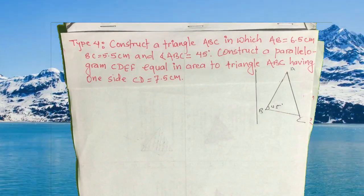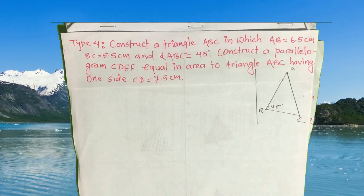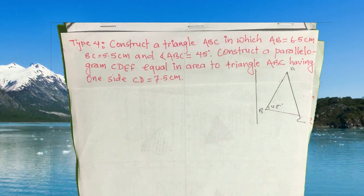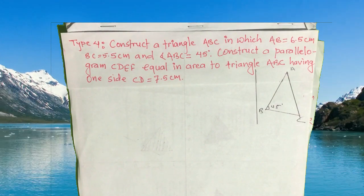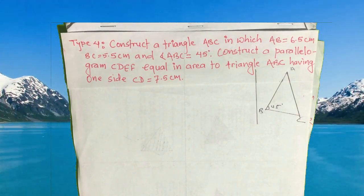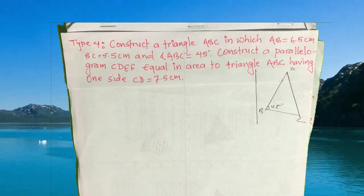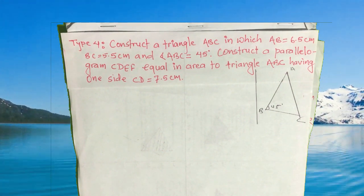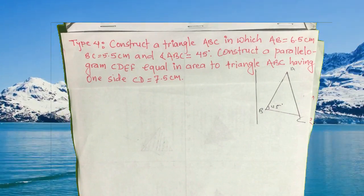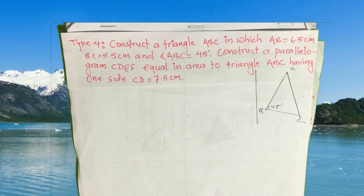Construct a triangle ABC in which AB equals 6.5 centimeters, BC equals 5.5 centimeters, and angle ABC equals 45 degrees. Construct a parallelogram CDEF equal in area to triangle ABC, having one side CD equals 7.5 centimeters.